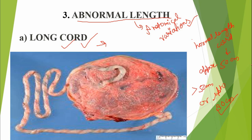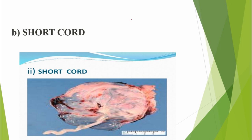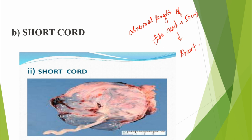A short cord also comes under abnormal length. The normal length is 50 cm, and a short cord is less than 35 cm.